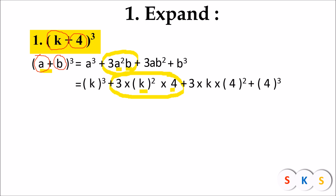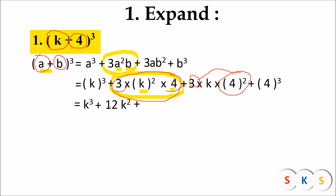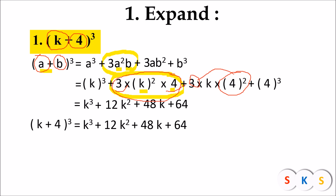Simplifying: k³ remains k³. Then 3 × 4 = 12, so we get 12k². For the next term, 4² = 16, and 16 × 3 = 48, giving 48k. And 4³ = 4 × 4 × 4 = 64. Therefore, (k + 4)³ = k³ + 12k² + 48k + 64.